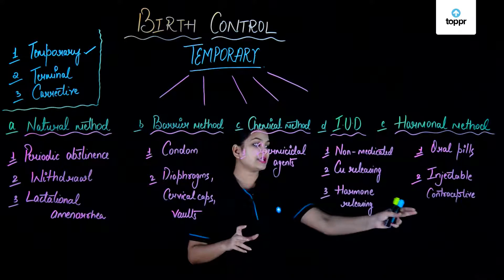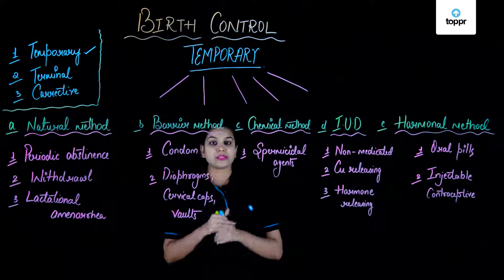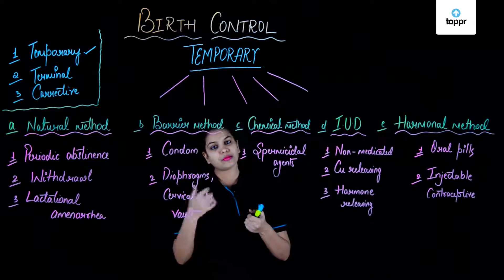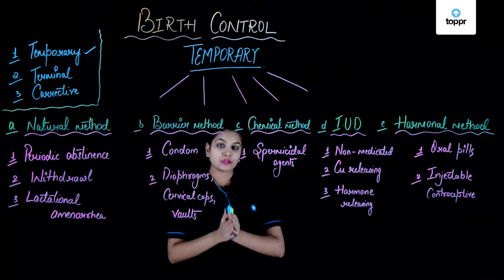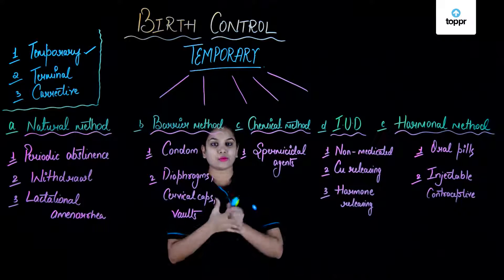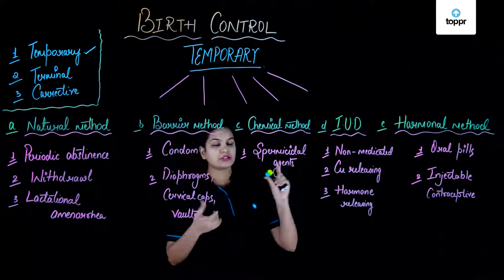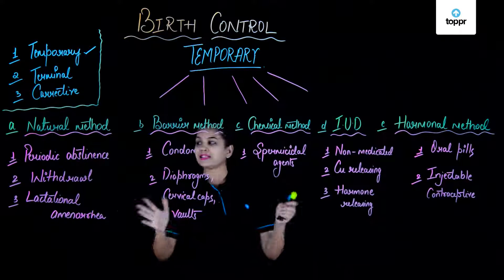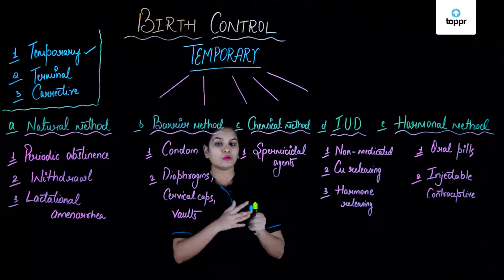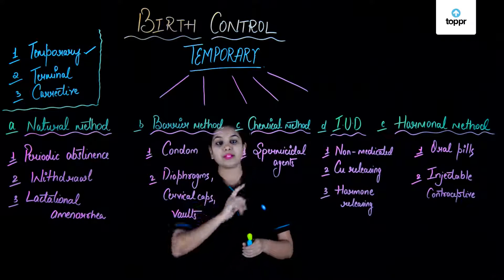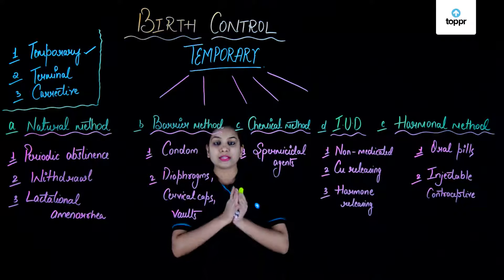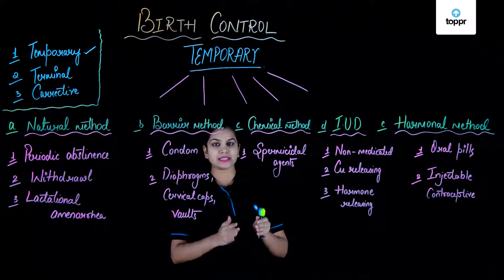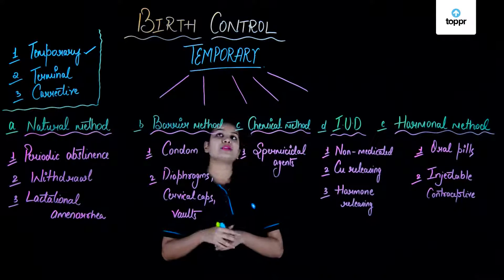Next are injectable contraceptives, which can be injections or implants. In injections, a certain amount of hormones is given to the muscles to prevent pregnancy. In implants, for example Norplant, the implant is kept under the skin and keeps releasing a certain amount of progesterone. These are the number of temporary methods which can be used to avoid unwanted pregnancy, though none of them assures 100% prevention.